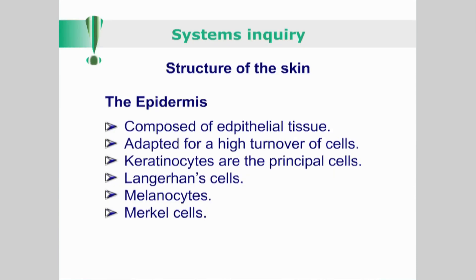The epidermis is composed of epithelial tissue adapted for high turnover of cells. Apart from the keratinocytes, the principal cells of the epidermis, it also contains Langerhans cells, melanocytes and Merkel cells.